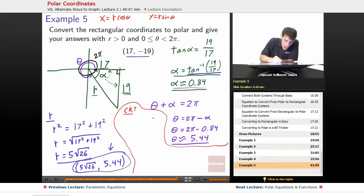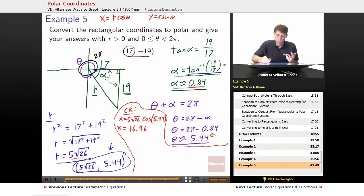So if we want to do a check, well x equals r cosine theta, so that means x is equal to our r is 5 root 26, so 5 root 26 times cosine of 5.44. We plug that into a calculator and we wind up getting x is equal to 16.96. What did we have originally? We originally had 17, so that makes sense that we're winding up seeing 16.96 compared to 17. It's just round off error, but basically our answer is correct, so it checks out.